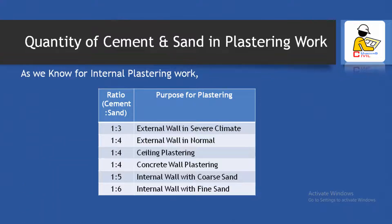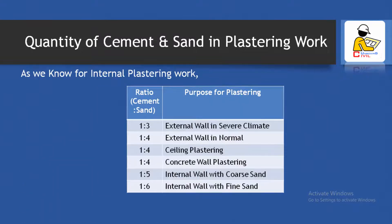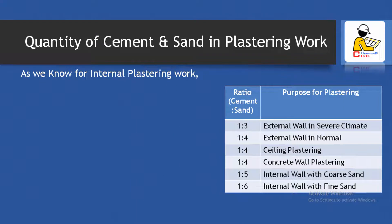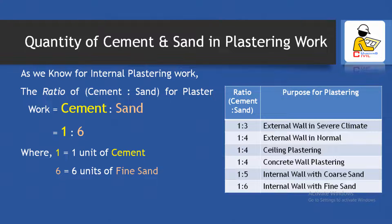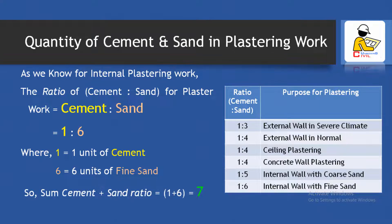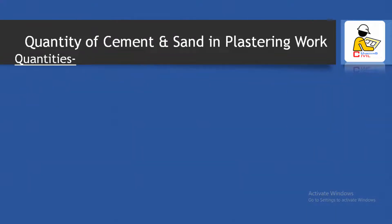In this calculation, we have considered a 1:6 ratio for internal wall plastering work, where 1 is one unit of cement and 6 is six units of sand. So the total cement-plus-sand ratio equals 1 + 6, which is 7.